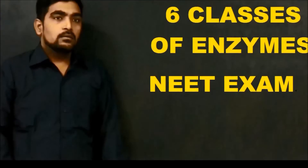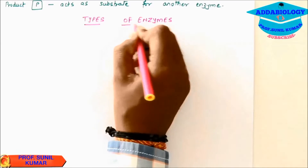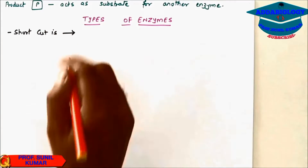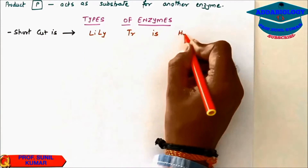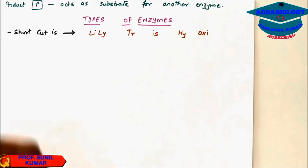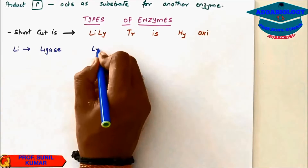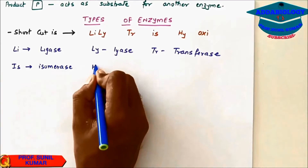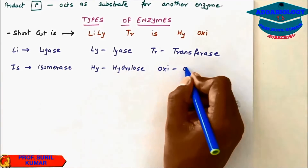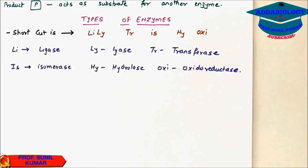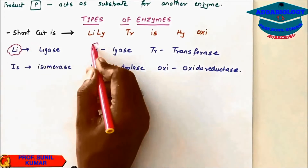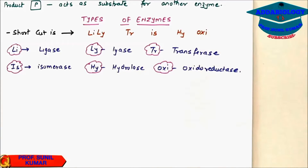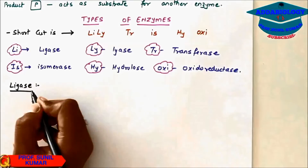There are six classes of enzymes for the NEET exam. A shortcut to remember them is: 'lily teacher is high oxy' — Li is Ligase, Ly is Lyase, Teacher is Transferase, Is is Isomerase, High is Hydrolase, Oxy is Oxidoreductase.